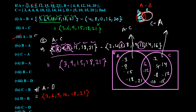Next is B difference A — found in B but not in A. B is {4, 8, 12, 16, 20}. 4 is not in A — take it. 8 is not in A — take it. 12 is in A — do not take it. 16 is not in A — take it. So the answer for B difference A is {4, 8, 16}.